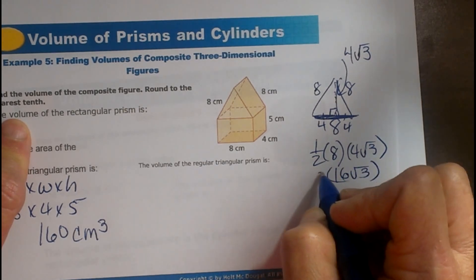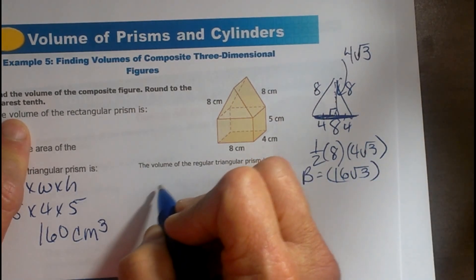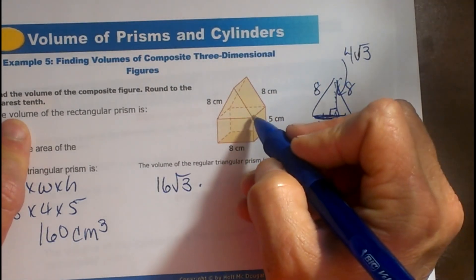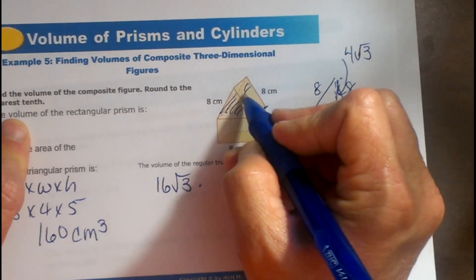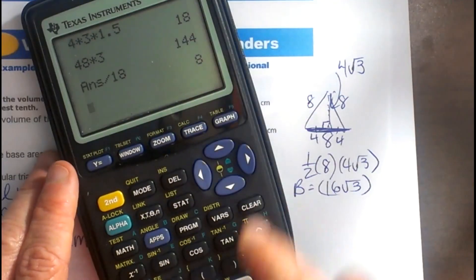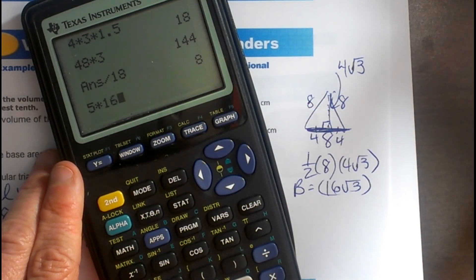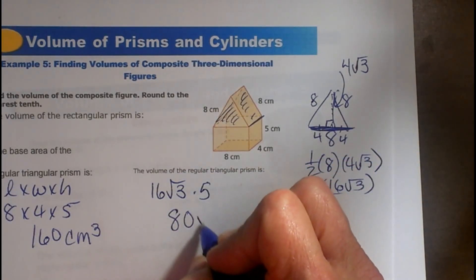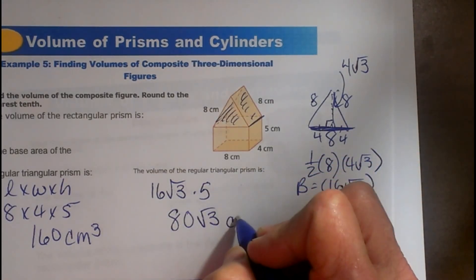So that is now my base area. Base area times the height. Now the height is this part, right, because here's my parallel side. So times 5, and what's 16 times 5? I believe that's 80. So that's going to be 80 root 3 cubic centimeters.